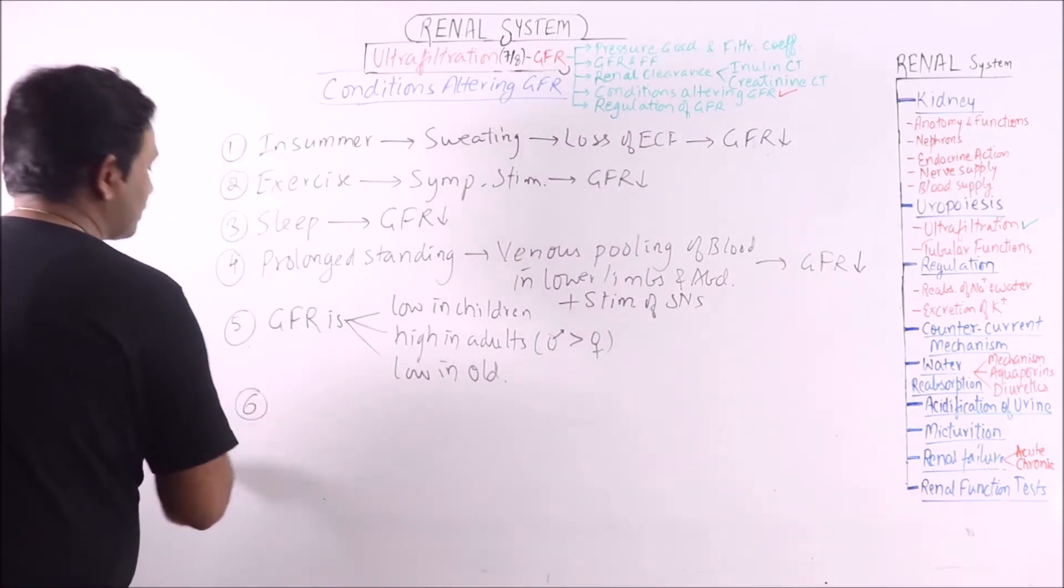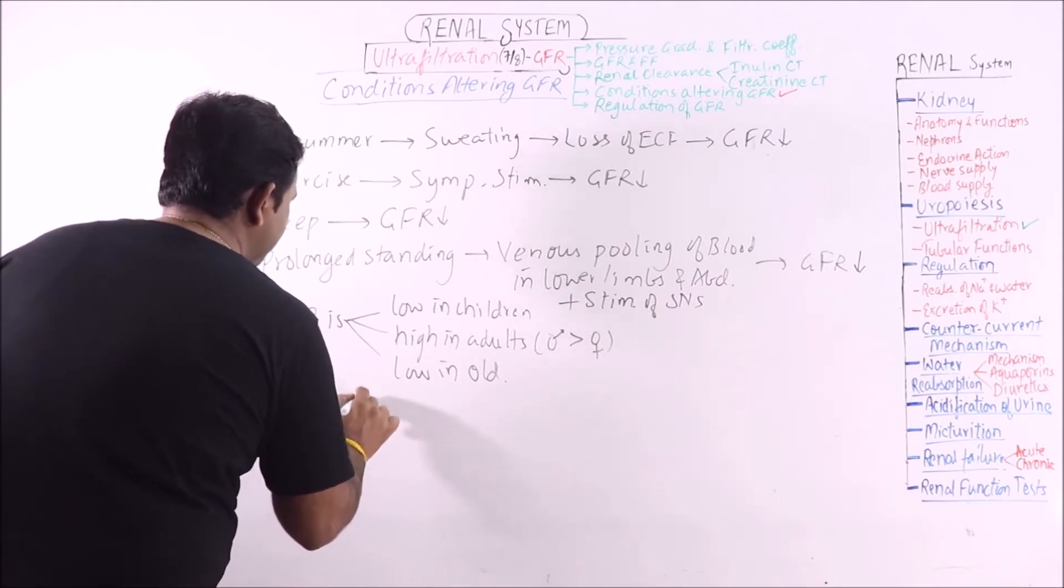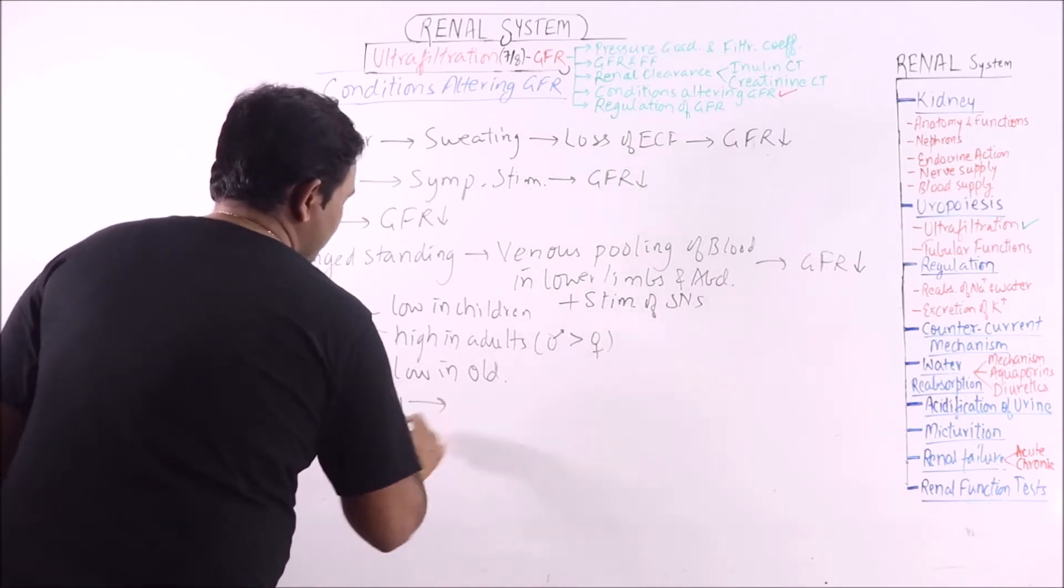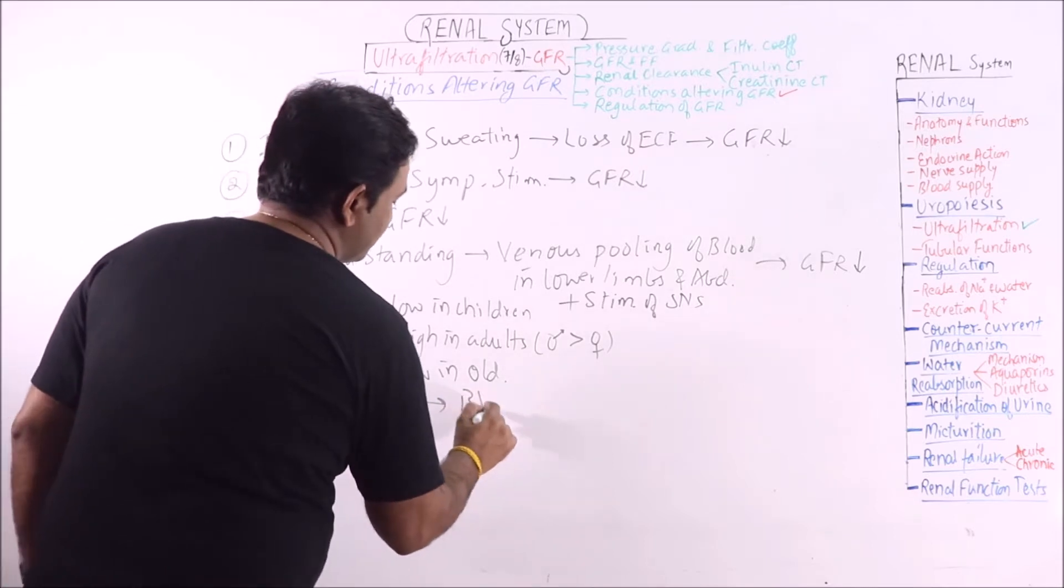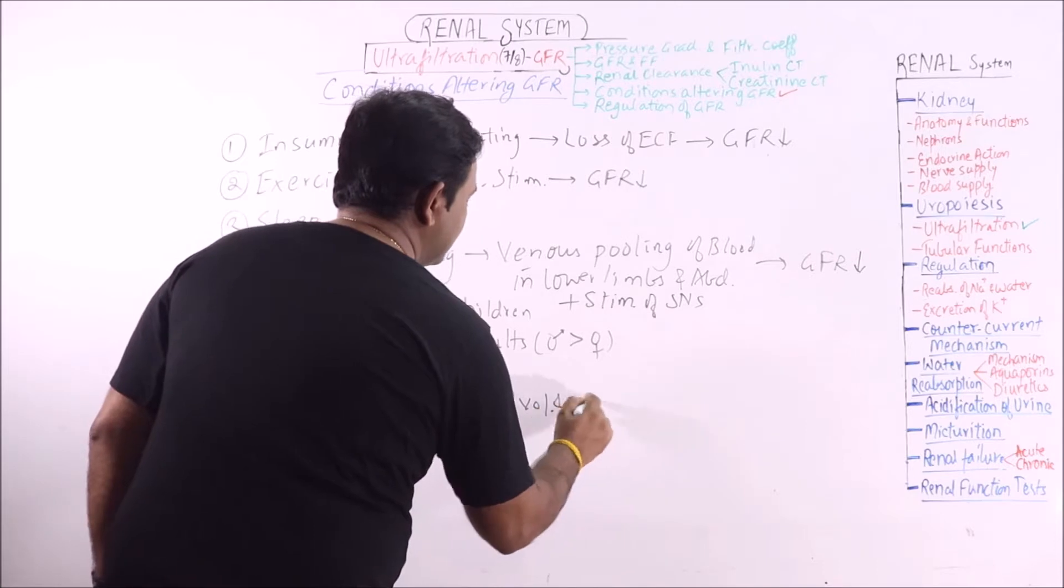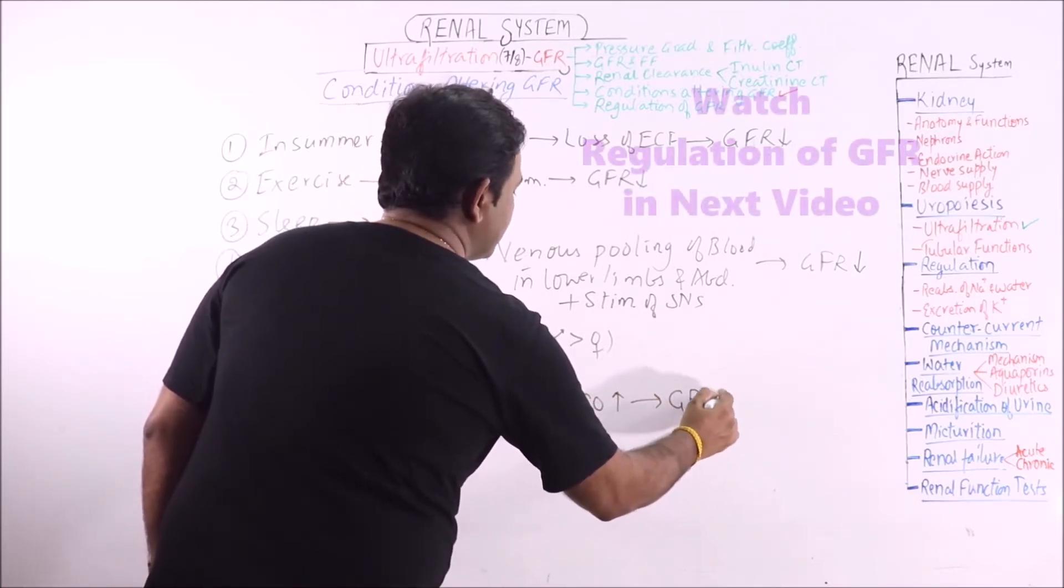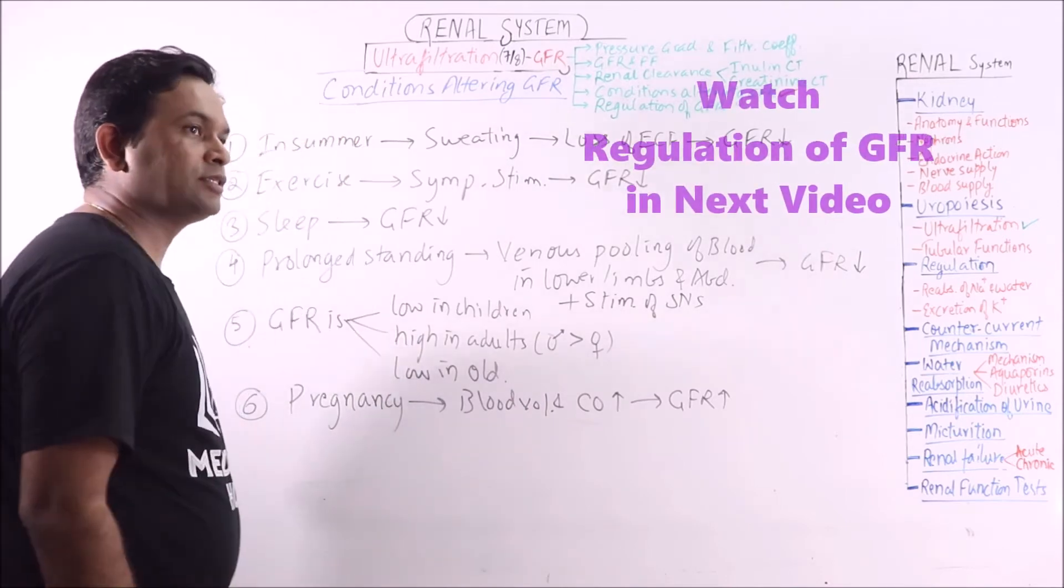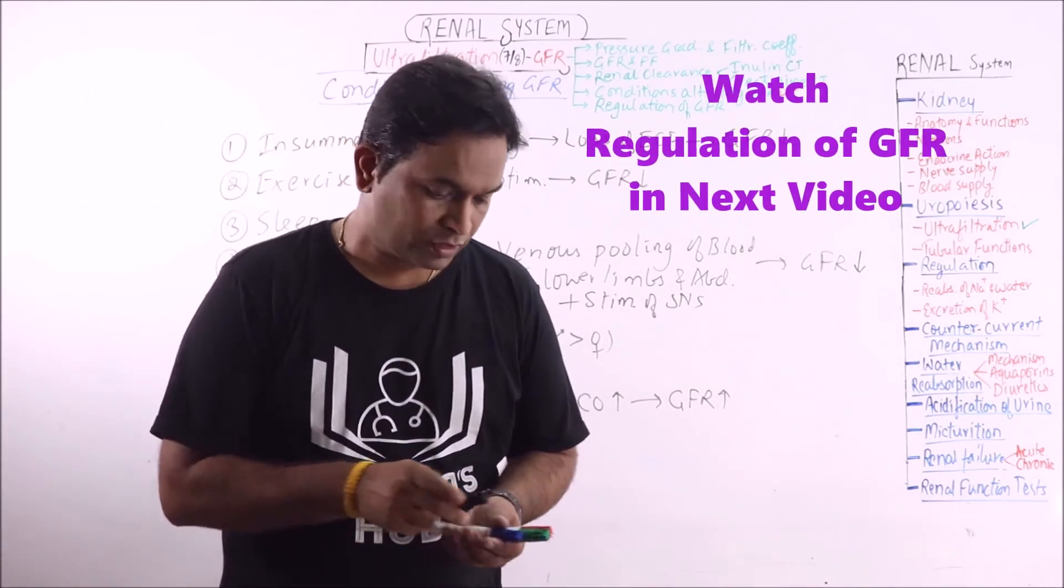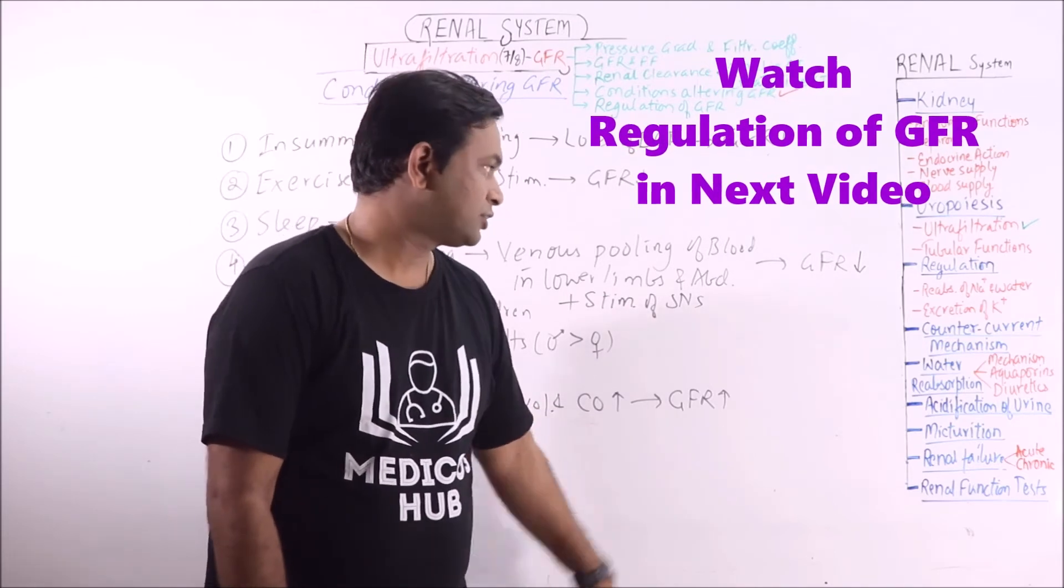In pregnancy, blood volume and cardiac output increase, which causes GFR to increase. This increase in GFR is mainly seen in the second and third trimesters of pregnancy.